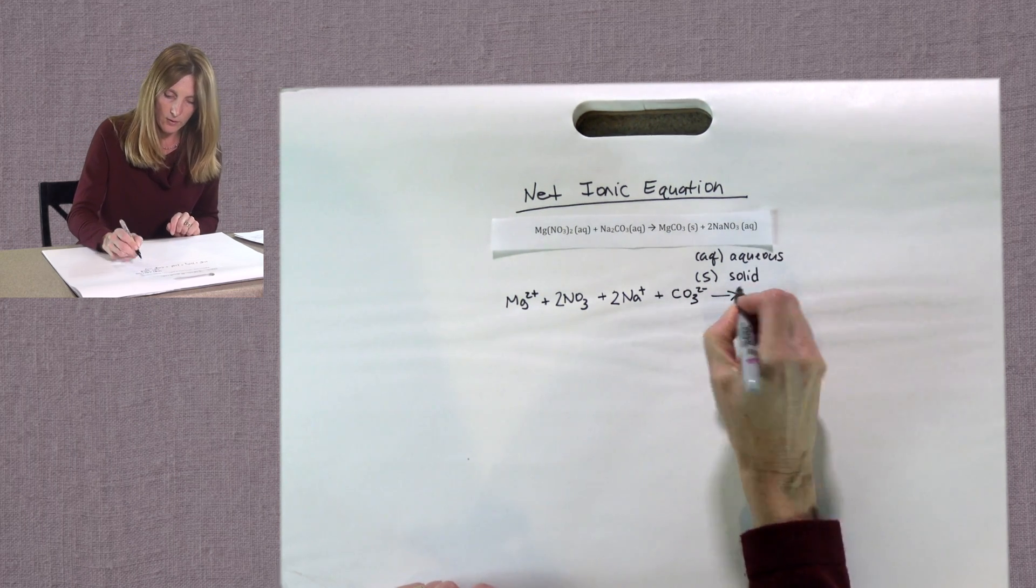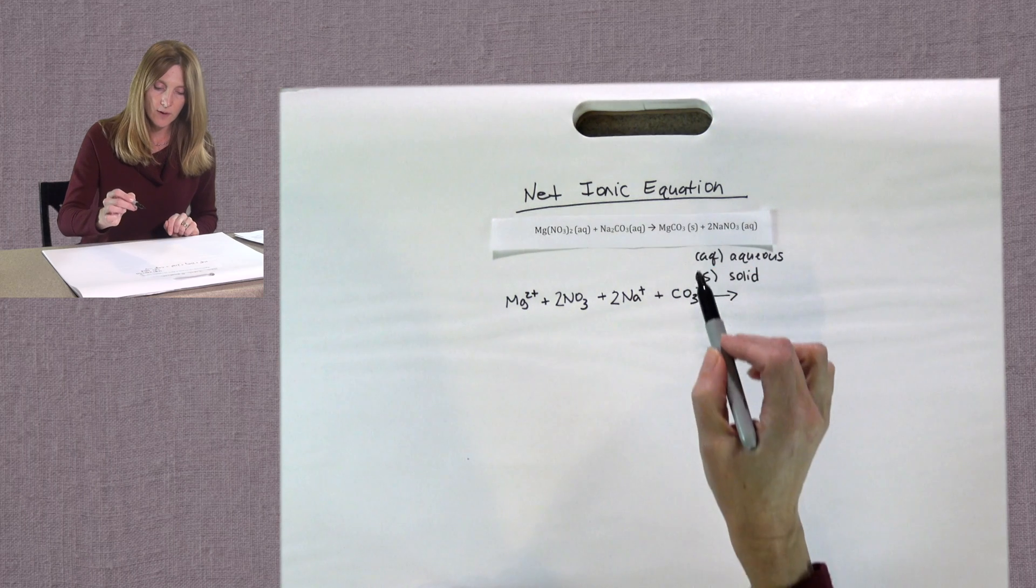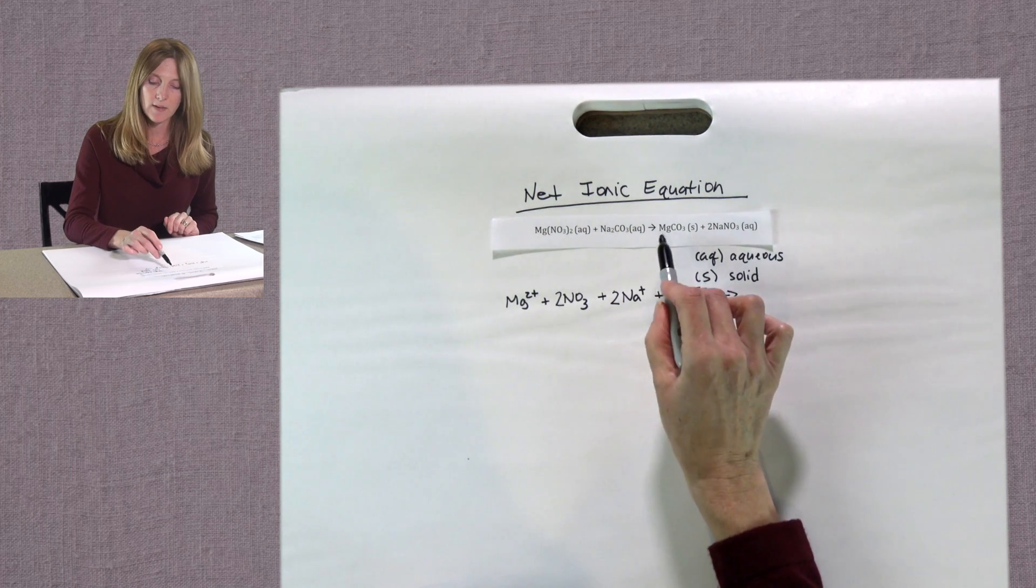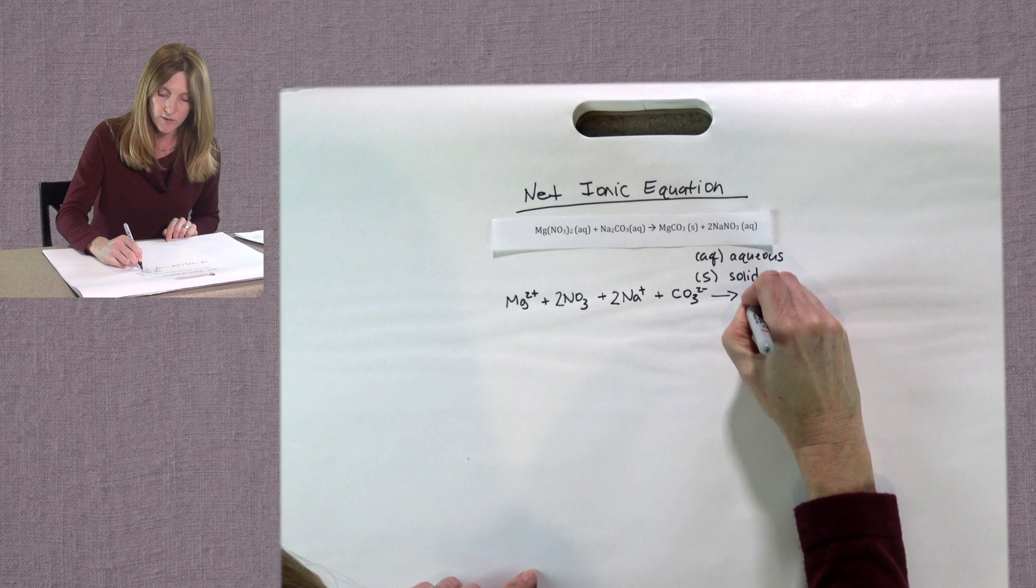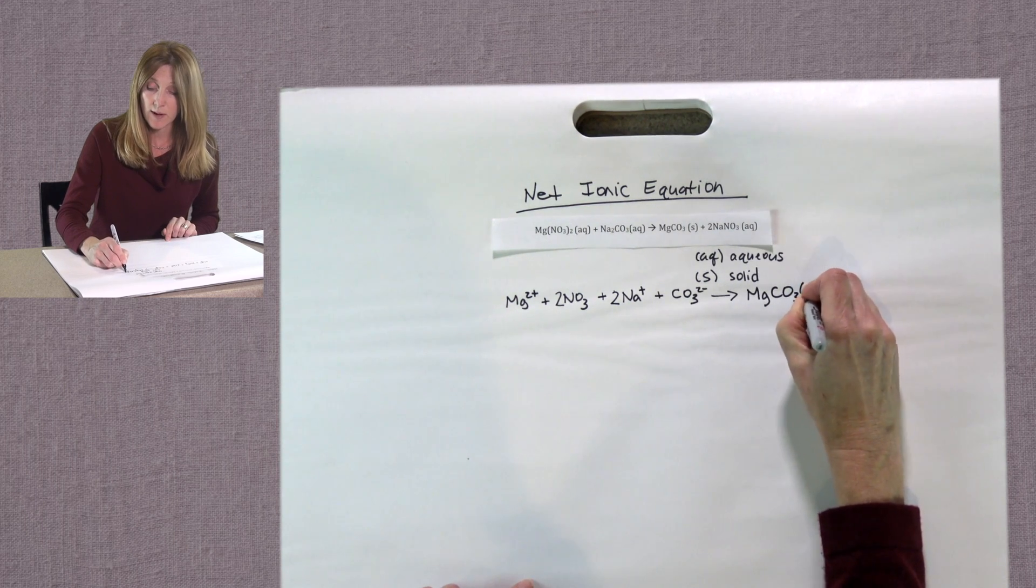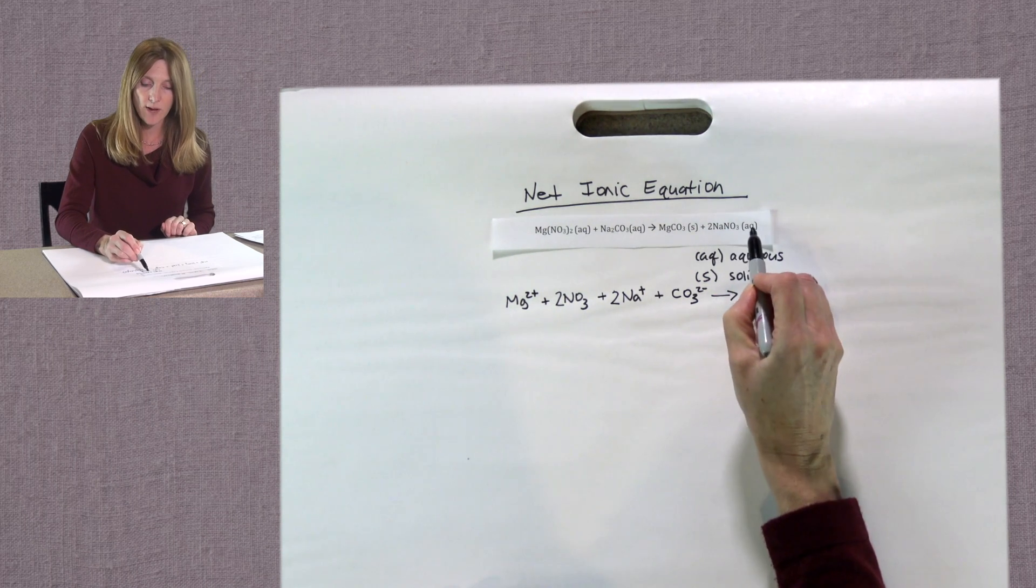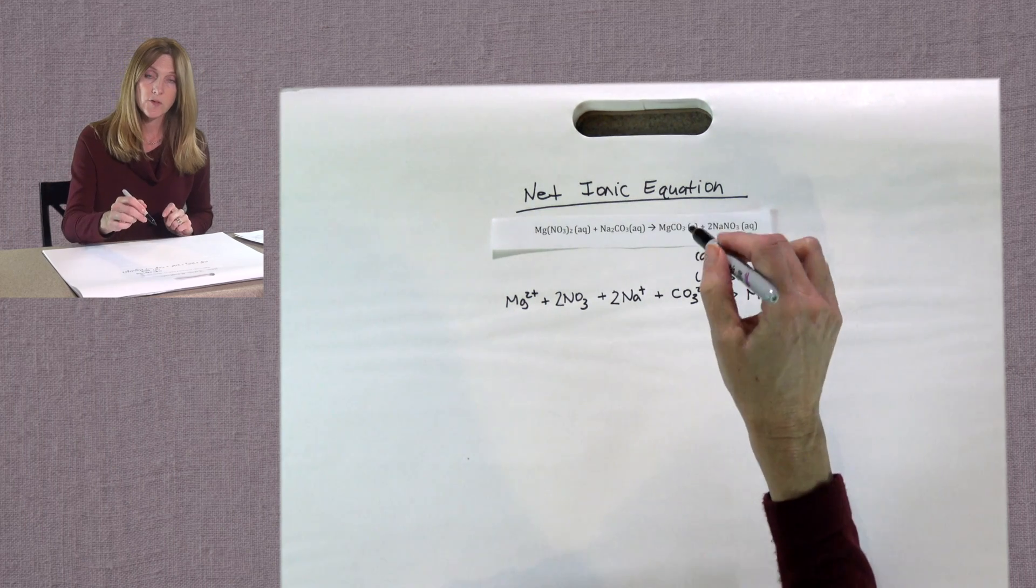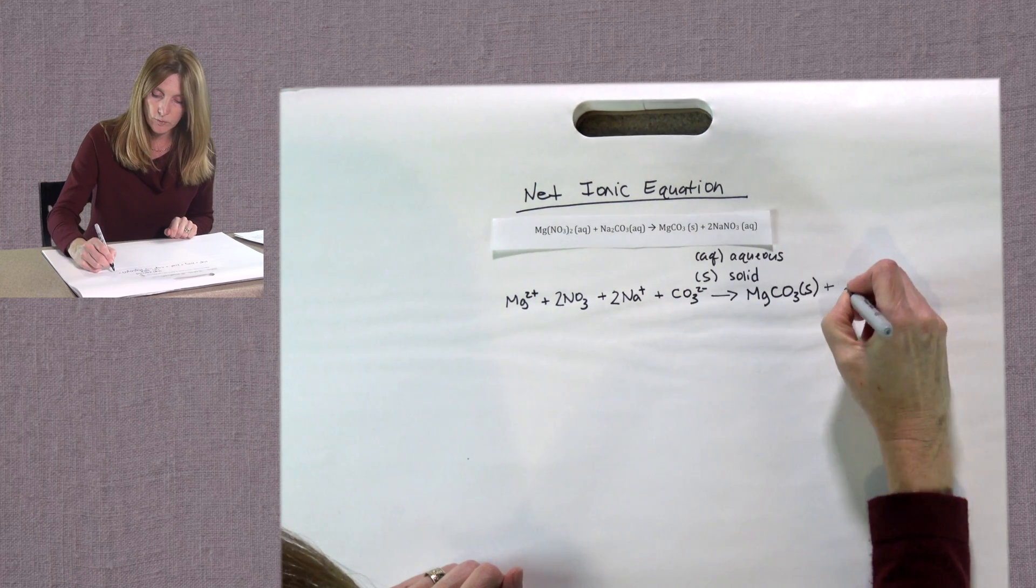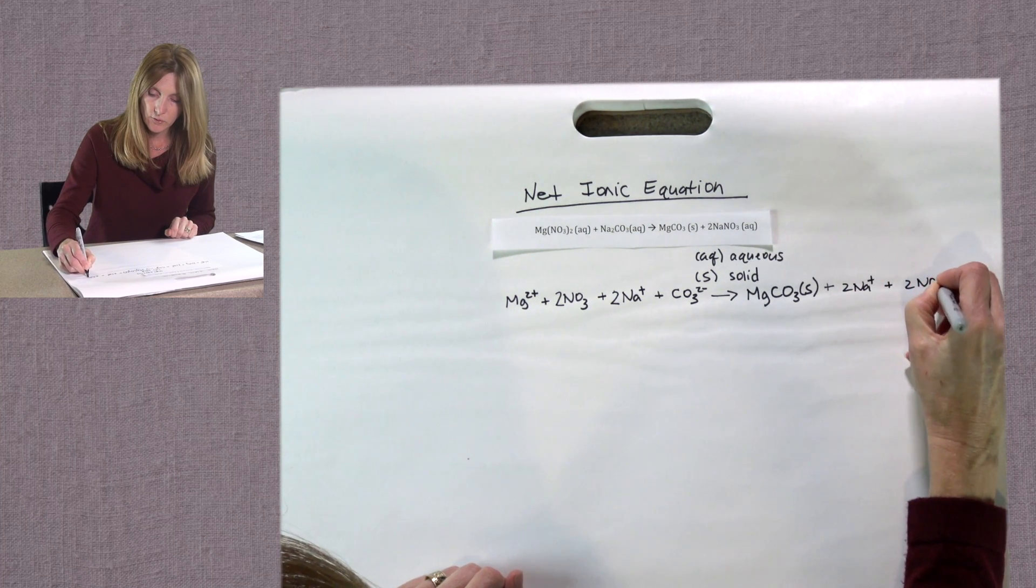Then we have our arrow that shows our products. Magnesium carbonate has an S after it. Remember the S means it is a solid, which means it is not soluble in water. So magnesium carbonate will not come apart in solution. So we're just going to leave that written as an ionic compound. I'm going to write an S after it to help us remember that. And then our last compound is sodium nitrate, which has the AQ after it, which again means aqueous, which means the sodium and the nitrate will come apart in solution. So let's go ahead and write that down. We will have two sodium ions and we will have two nitrate ions.